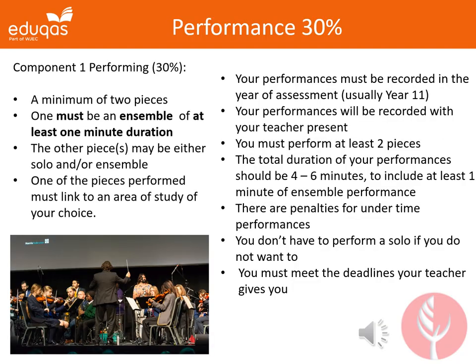What are the general requirements of Component 1 - Performing? You will need to perform a minimum of two pieces, one of which must be an ensemble performance of at least one minute duration. The other piece or pieces may be a solo or ensemble. One of the pieces you perform must link to an area of study of your choice. Please see the four areas of study as defined in the specification.